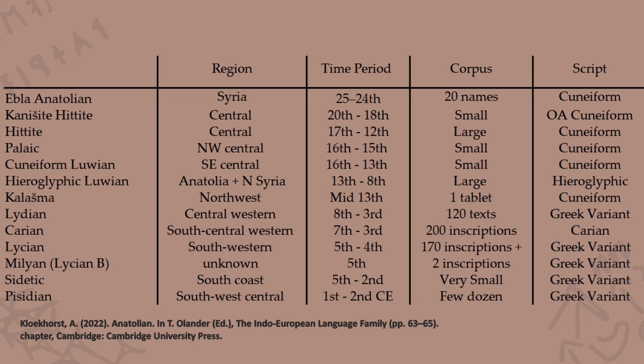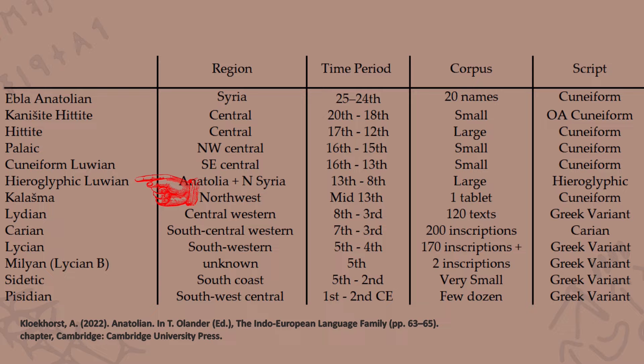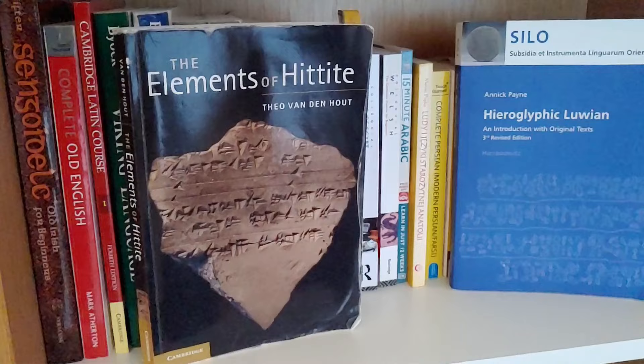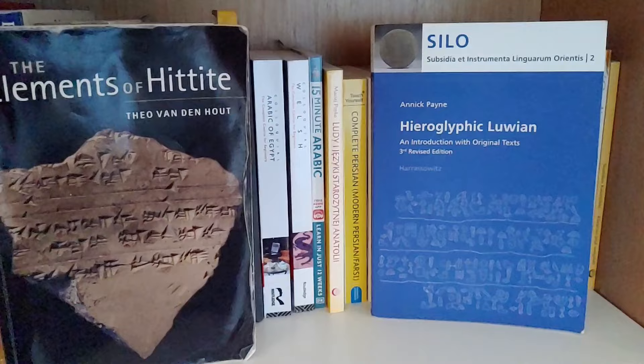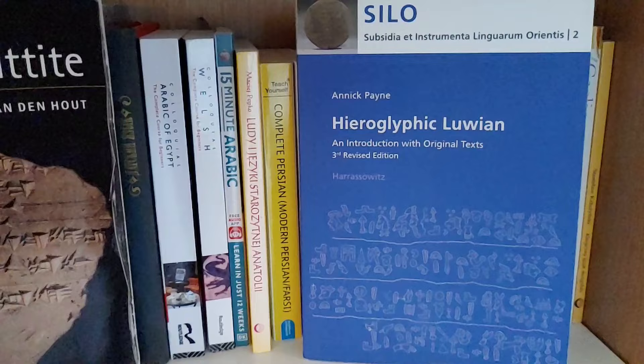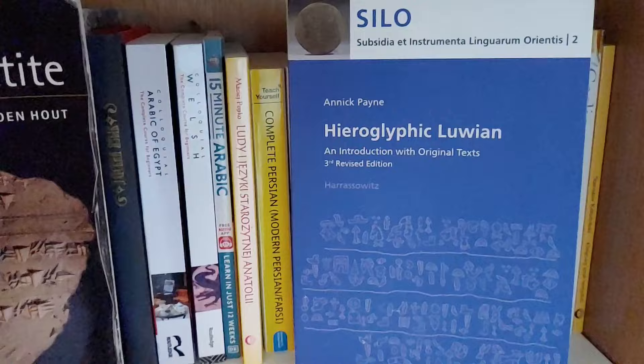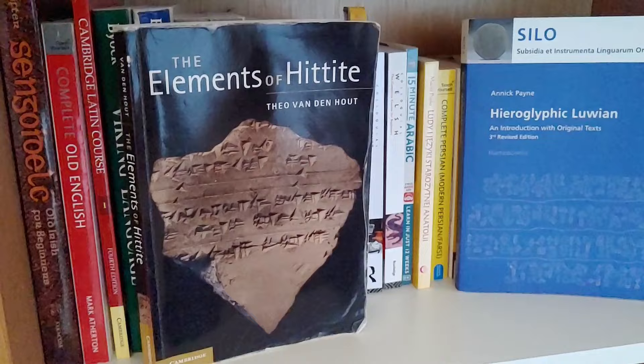So we have Ebla Anatolian, then Kanišite Hittite, then we come into the first of the major players: the Hittite language. If anybody's interested in learning Hittite or Hieroglyphic Luvian, I would recommend picking up two books: The Elements of Hittite by Theo van den Hout, and Hieroglyphic Luvian: An Introduction with Original Texts, the third revised edition, by Annick Payne. Both are extremely useful and accessible for anybody looking to begin their journey into the Anatolian languages.